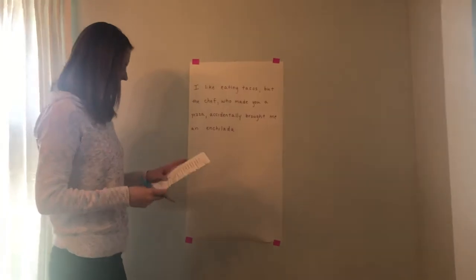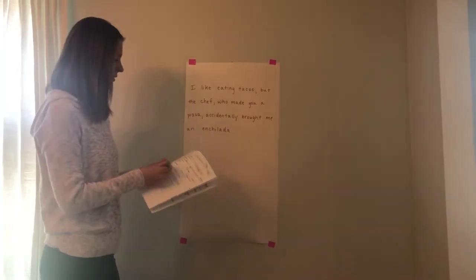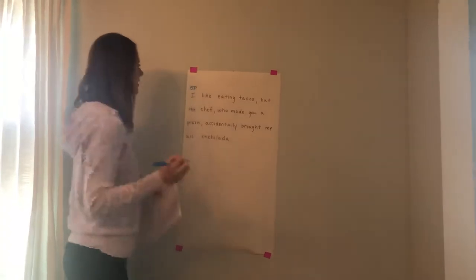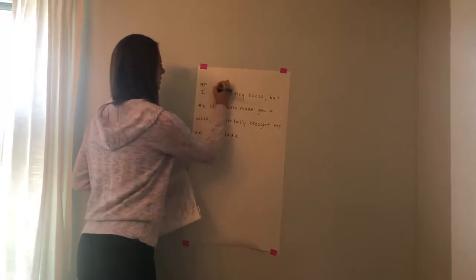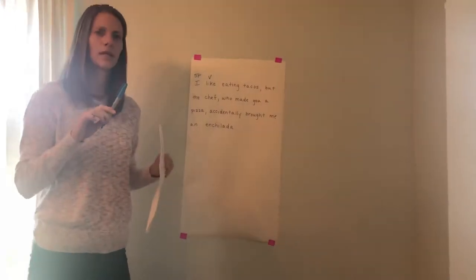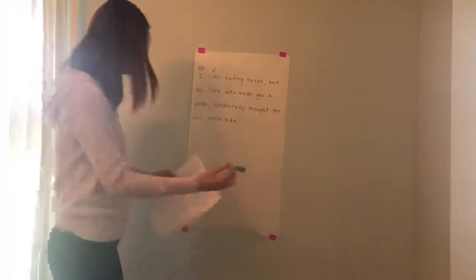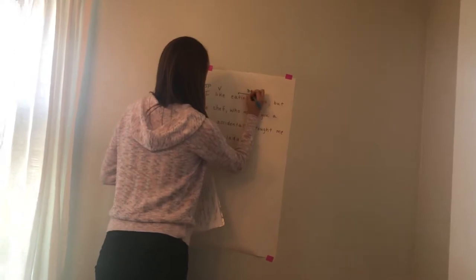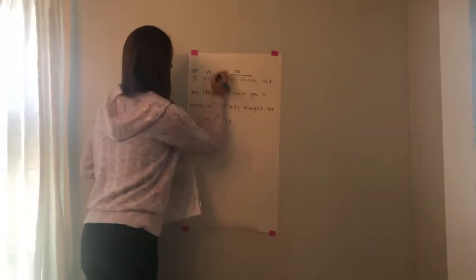Let's go to our independent clause first and parse it: 'I like eating tacos.' Who likes eating tacos? I — subject pronoun. What is being said about I? Like — which is the verb. I like who or what? Eating tacos. This is a multi-word direct object. 'I like' — which makes the verb transitive — 'eating tacos.'